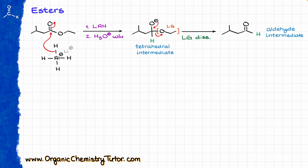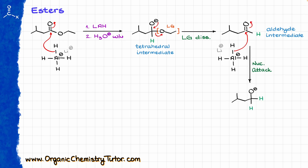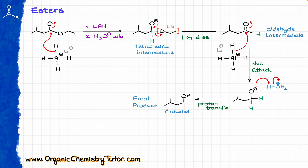Same thing as before — rinse and repeat. We are going to bring our lithium aluminum hydride, and I will do the nucleophilic attack on my carbonyl, giving me the corresponding alkoxide as the intermediate. I'm going to bring my acid for the acidic workup, protonate my alkoxide, giving me the final product, which in this case is again going to be the primary alcohol. Pretty easy.